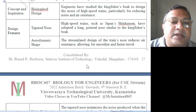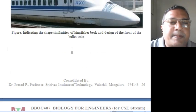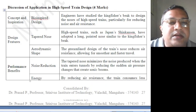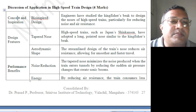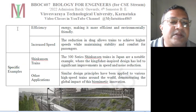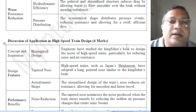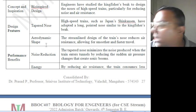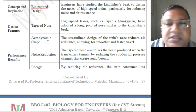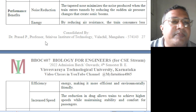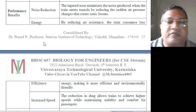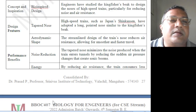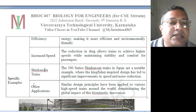Discussion of application in high-speed train design. The four points for four marks are: concept and inspiration (bio-inspired design), design features (tapered nose and aerodynamic shape), performance benefits (noise reduction and energy efficiency, increased speed), and a specific example — the Shinkansen train of Japan.